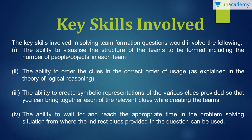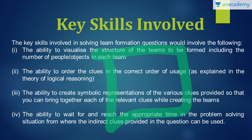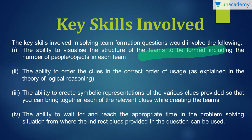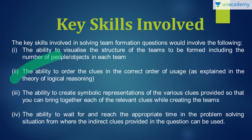Moving on to the key skills involved to solve this kind of question. Skill one: the ability to visualize what kind of structure will be smooth enough to get to the solution — it will depend on the teams to be formed, including the number of people or objects in each team. Skill two: the ability to order clues in some proper order of use. We need to know how we can use the clues one after the other, depending on whether it is a direct or indirect clue or if we can fit it in the table at that time or not.